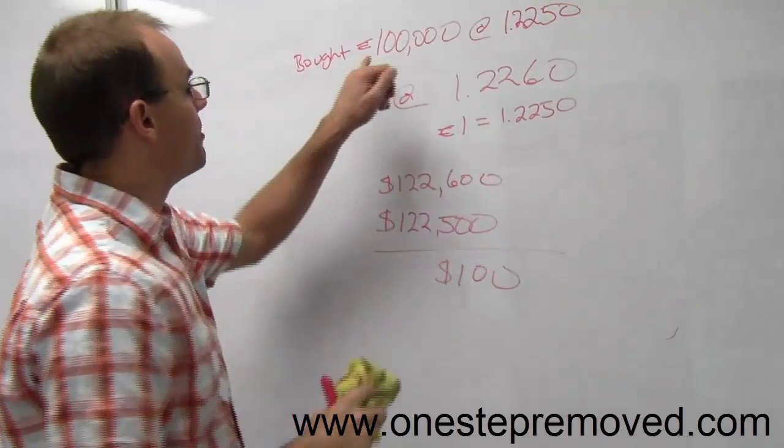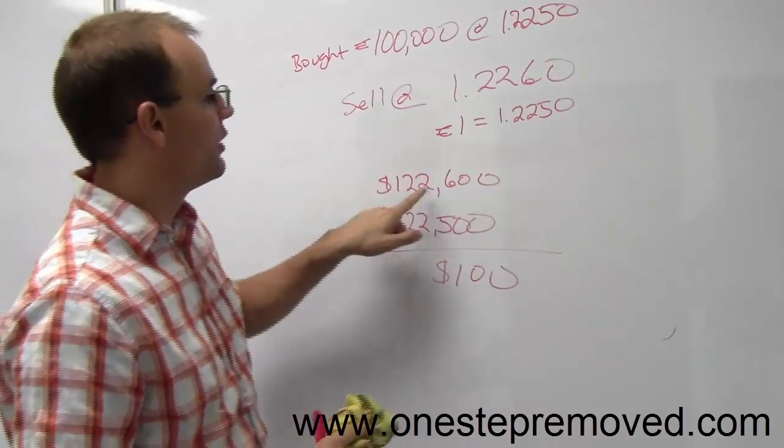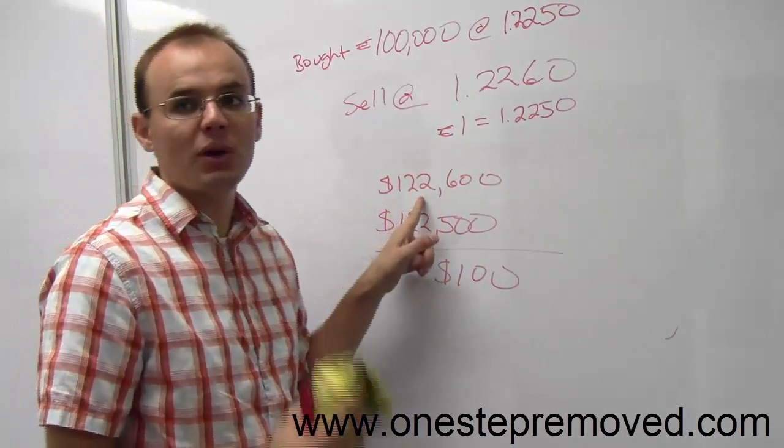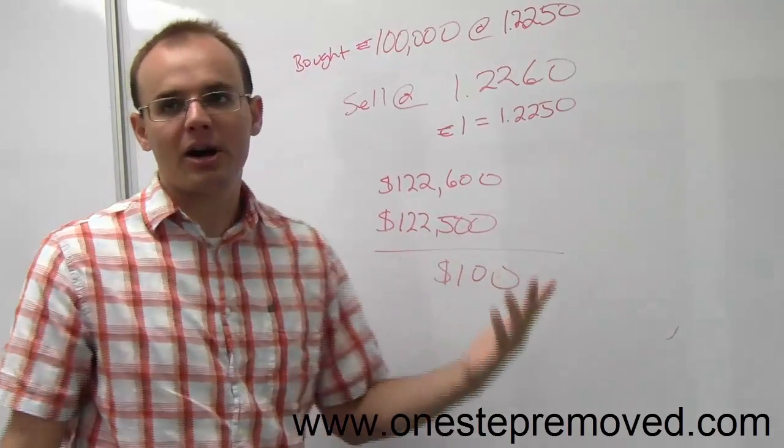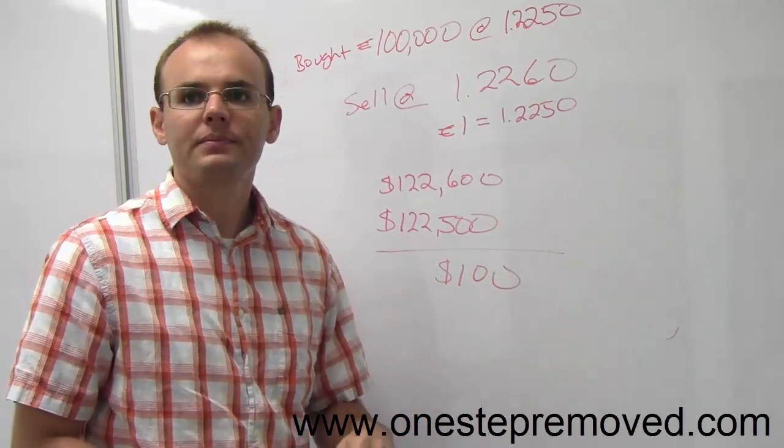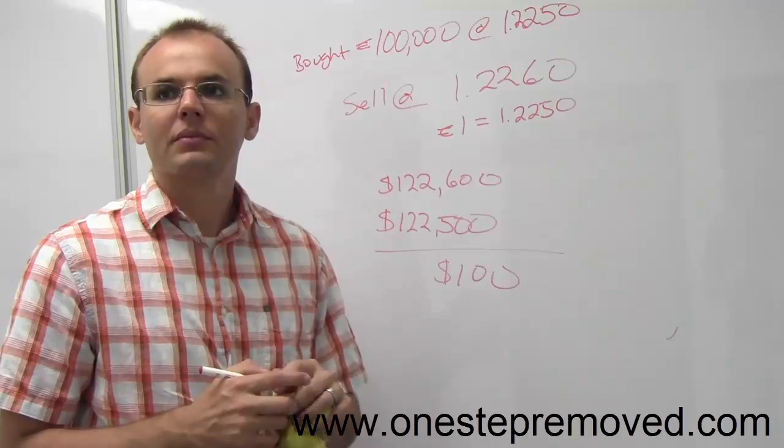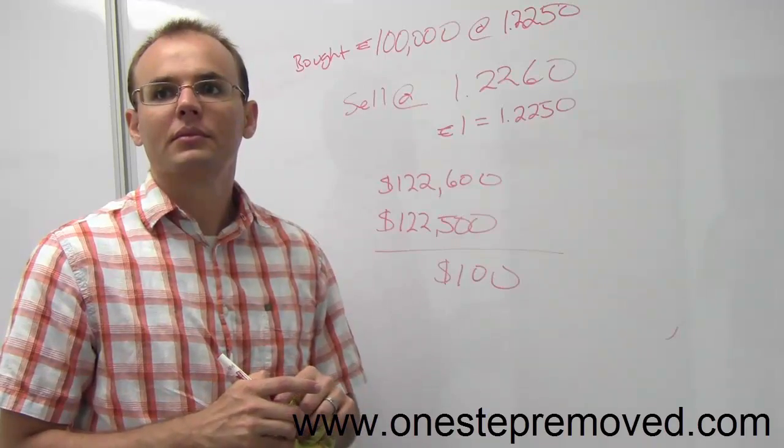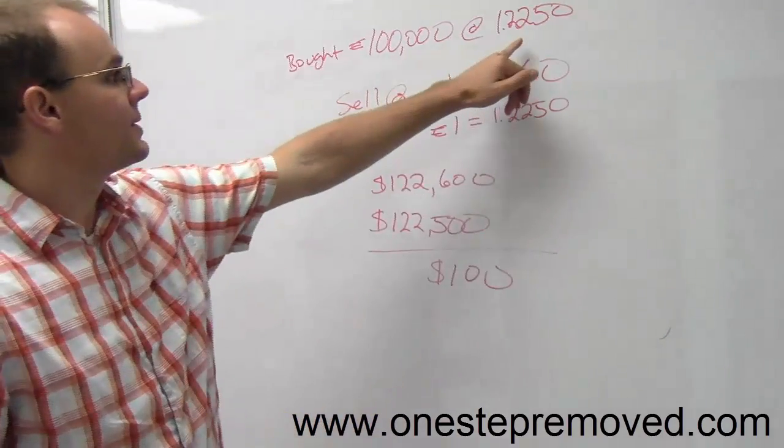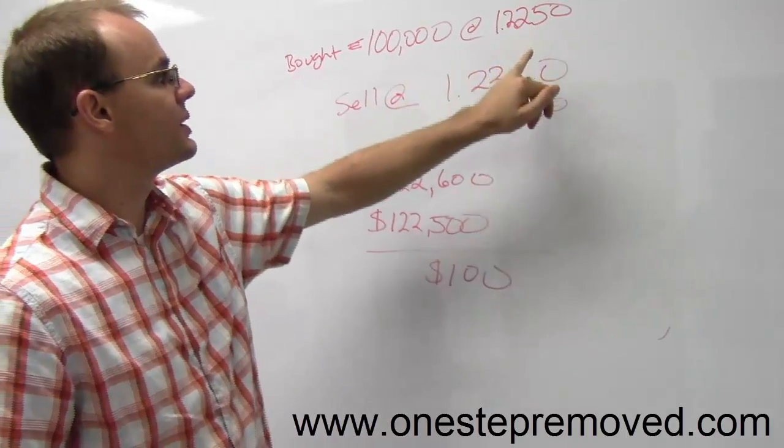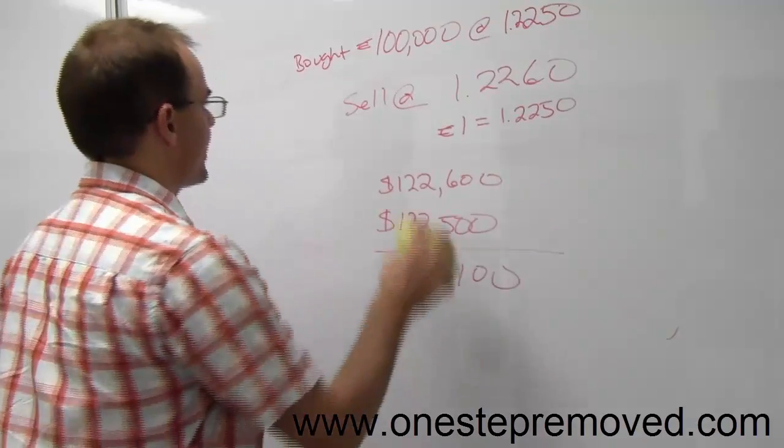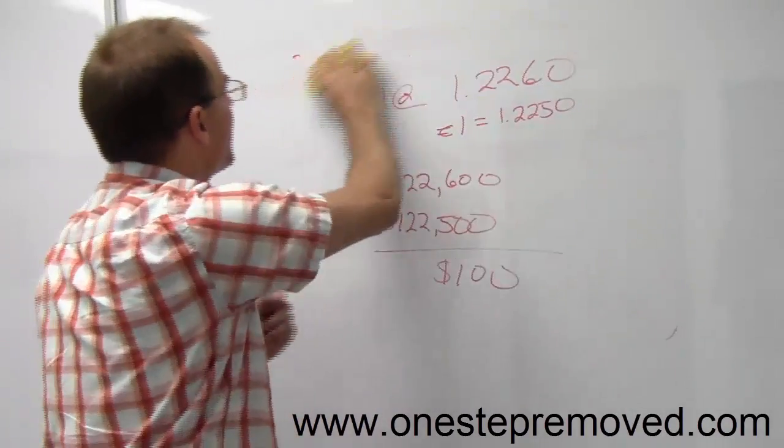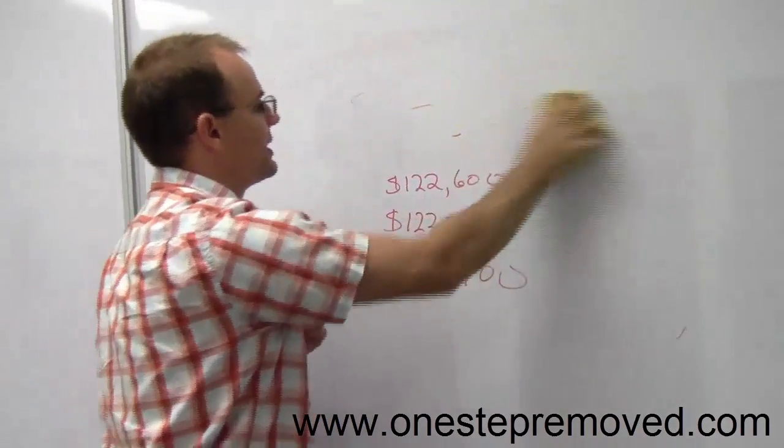If we only traded a mini lot, then instead of being 122,600, it would be 12,260 minus 12,250, you make a 10 dollar profit. But so where does the effect with that transaction cost that we're talking about with the difference between the buy and ask? This is affected because this is the price that you can effectively sell at. So let's go through the transactions from the beginning to the end.